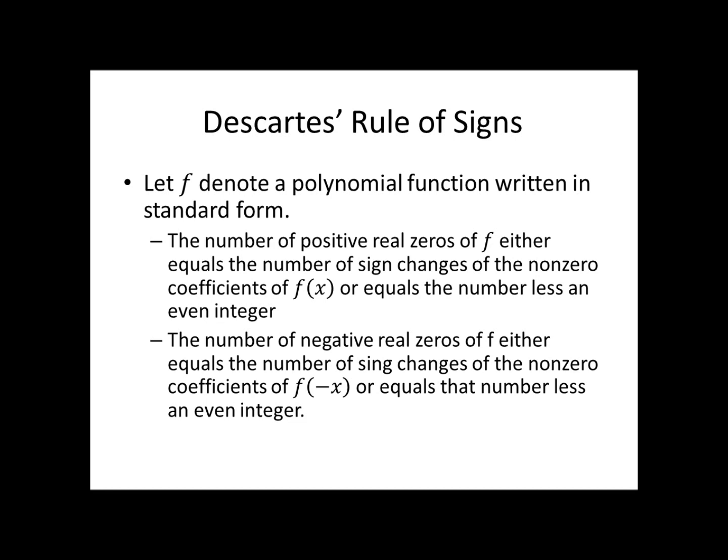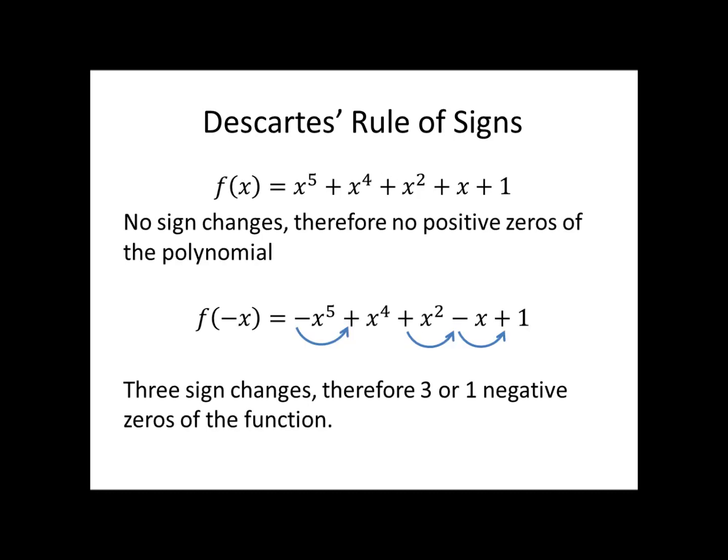Let's look at an example: f(x) = x⁵ + x⁴ + x² + x + 1. Notice there are no sign changes — every single term is positive. So there are zero positive zeros of the polynomial. No sign changes, no positive zeros.